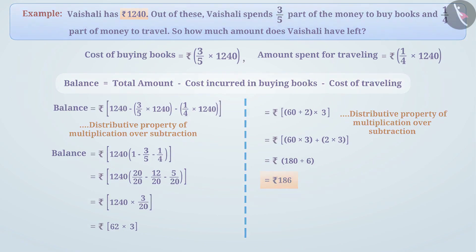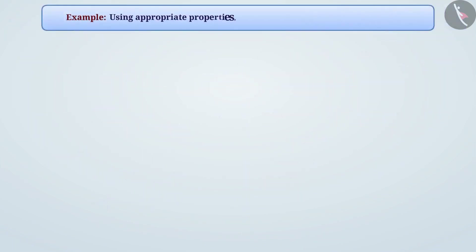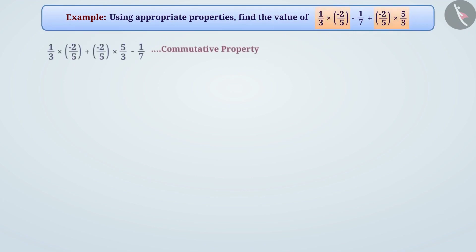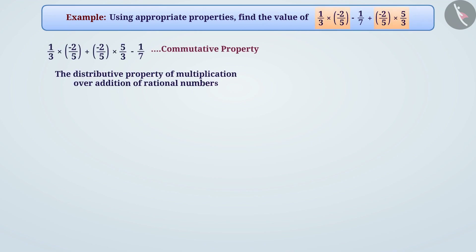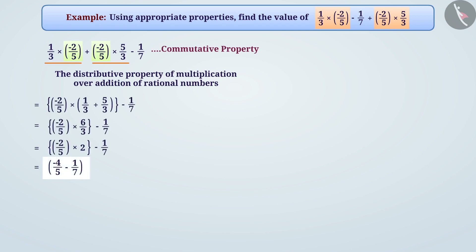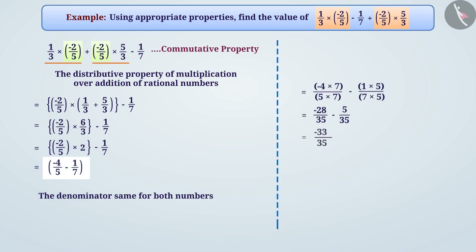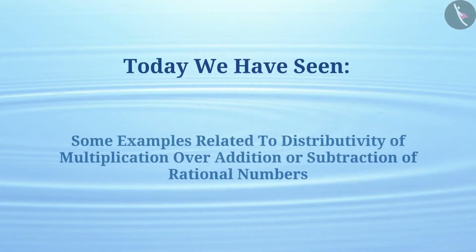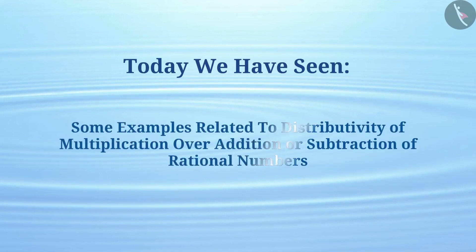Using appropriate properties, find the value of 1/3 × (−2/5) − 1/7 + (−2/5) × 5/3. Since addition is commutative for rational numbers, we can group the two terms with −2/5 together. From the distributive property of multiplication over addition, we take −2/5 out of the parenthesis. Making denominators the same and simplifying gives the result −33/35.